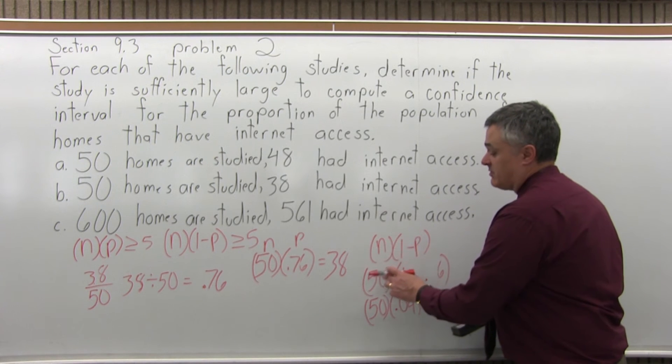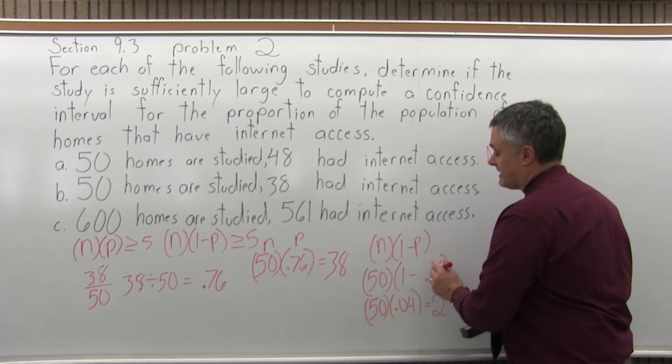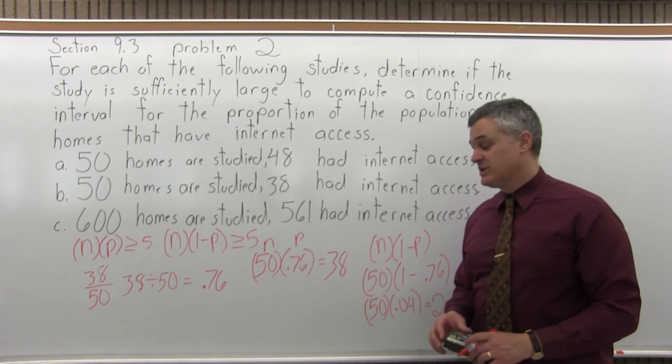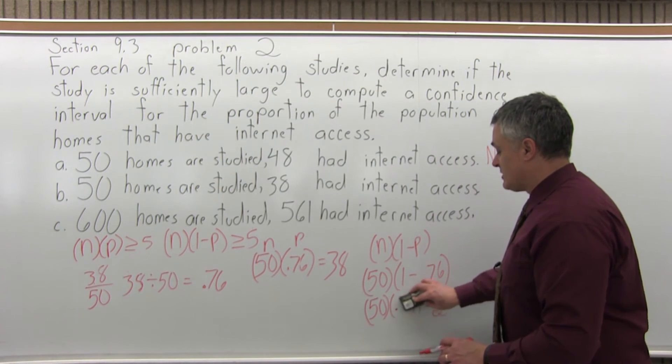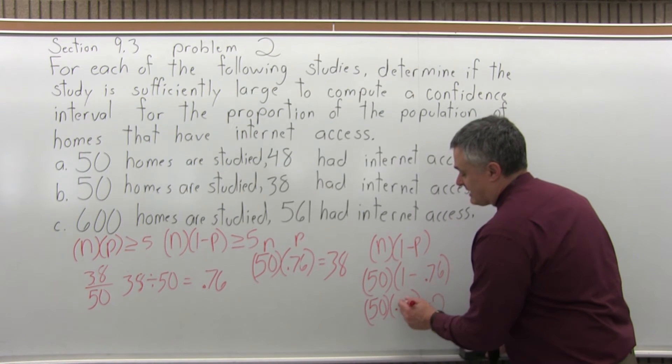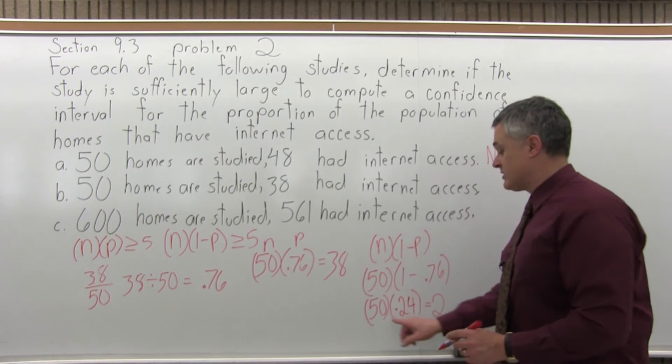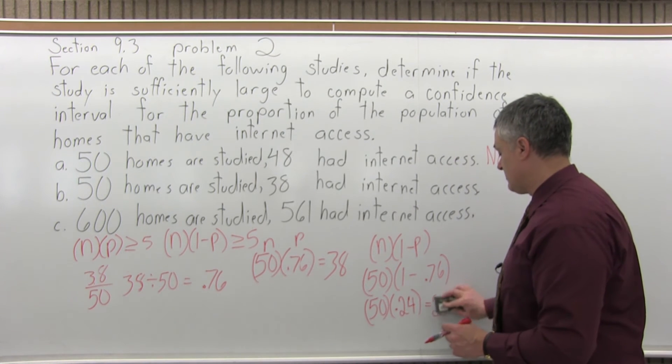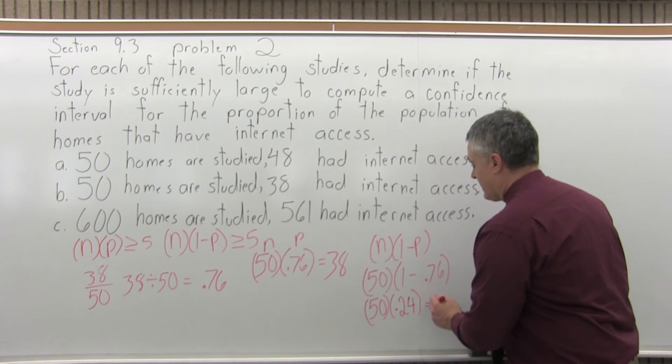So, n times 1 minus p, before it was 50 times 1 minus .96 for part a. But for part b, it's going to be times .76. So, that 1 minus .76 is .24. So, the n is 50 times .24 for the 1 minus p. That comes out to 12.